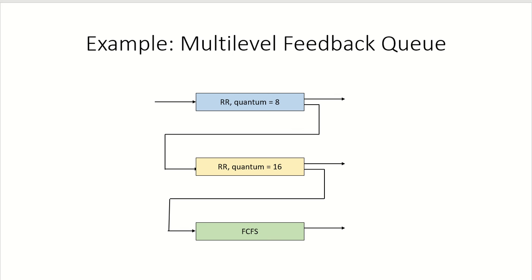In this video we are going to work out an example of the multi-level feedback queue scheduling algorithm. As we have discussed earlier, in this algorithm separate queues are maintained for processes of different priorities, and a process can go from one queue to another. The first queue might have the processes with the highest priority, and if they are not able to complete their CPU burst in this ready queue when they are scheduled, then they can be moved to a lower priority queue and so on.